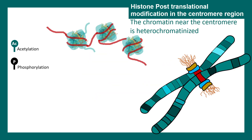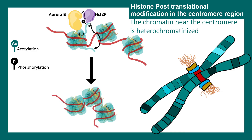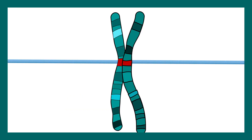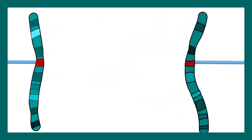One key modification occurring in the centromere nucleosome is histone H3 phosphorylation at the H3 S10 residue, carried out by Aurora B kinase. This phosphorylation attracts proteins like HST2p, which cleaves acetyl groups from the H4 histone. This deacetylation leads to further compaction of the chromatin in the centromere region, and this is one of the ways by which heterochromatinization is achieved in the centromeric region.